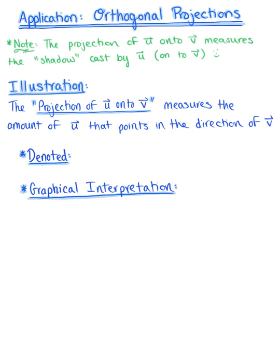More formally, we say that the projection of a vector u onto vector v measures the amount of vector u that points in the same direction as vector v. This is denoted as the projection of vector u onto vector v.